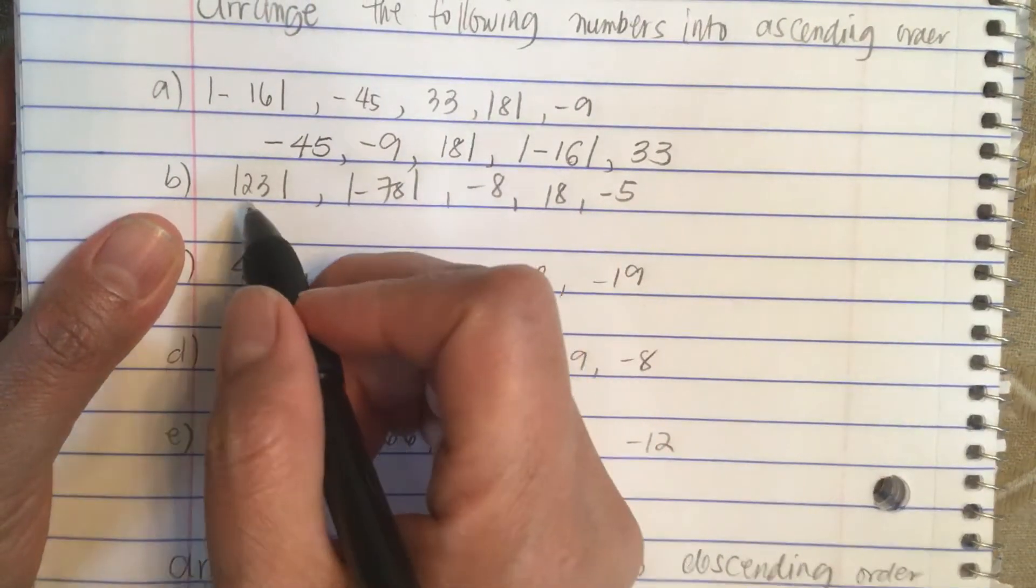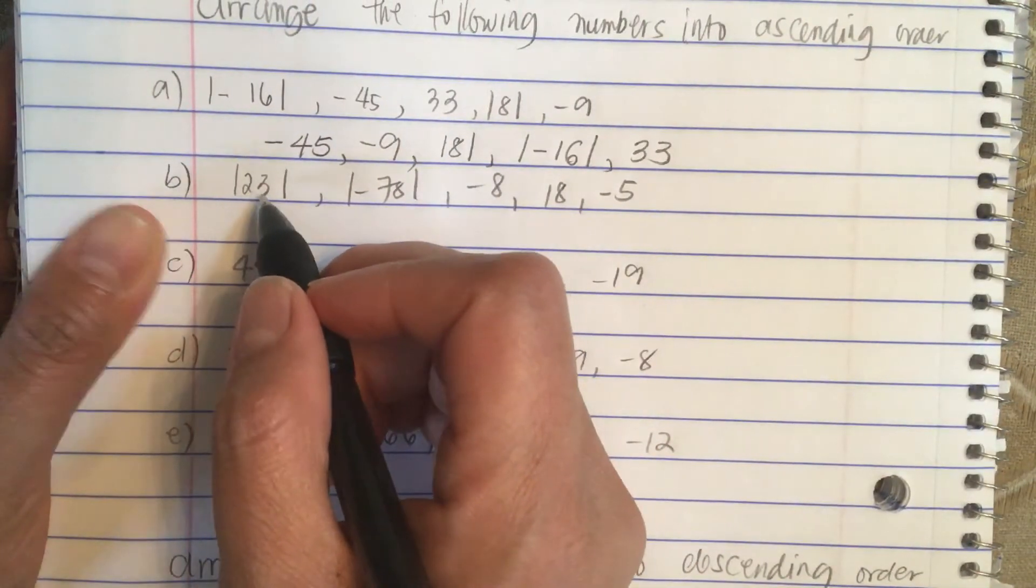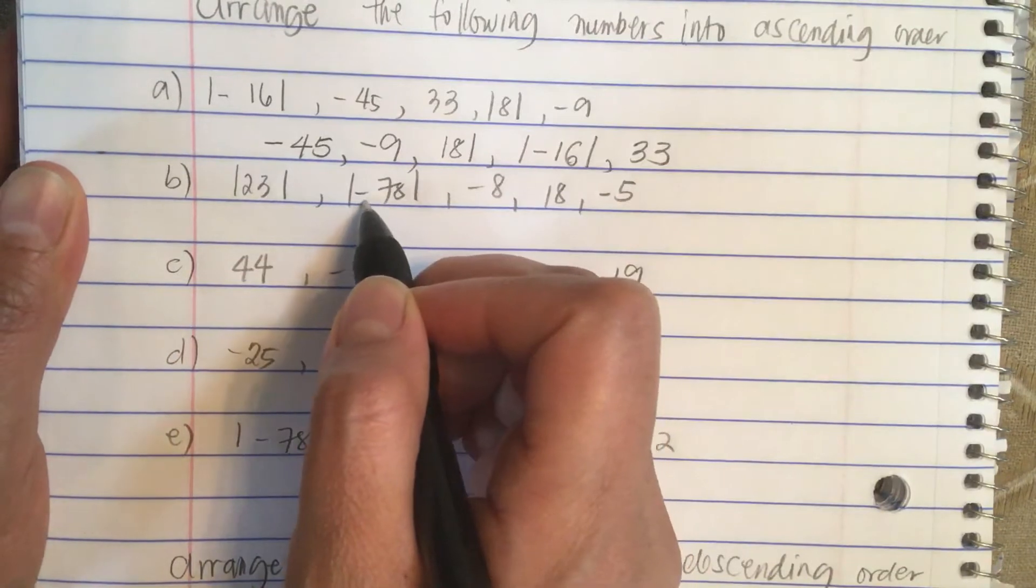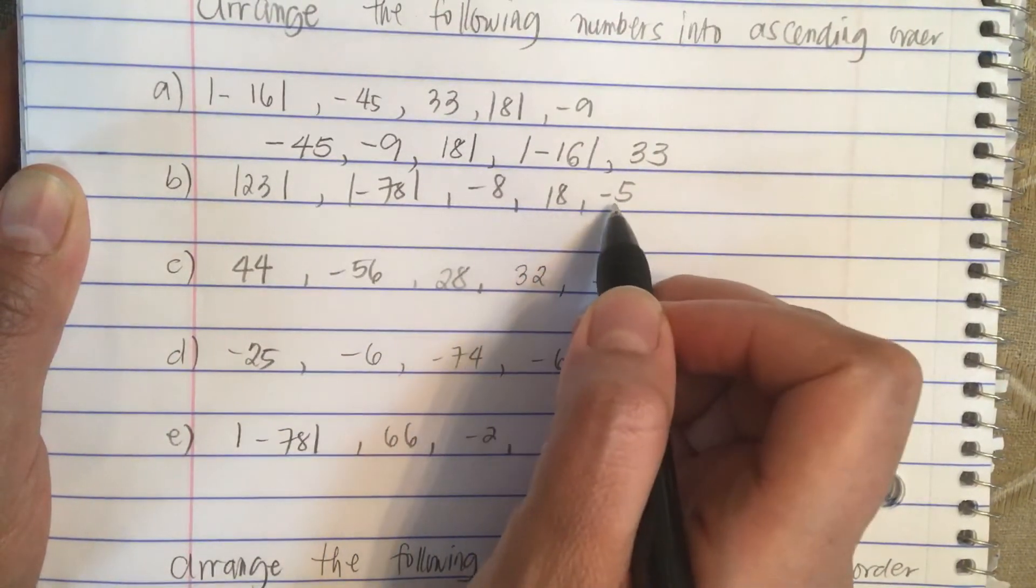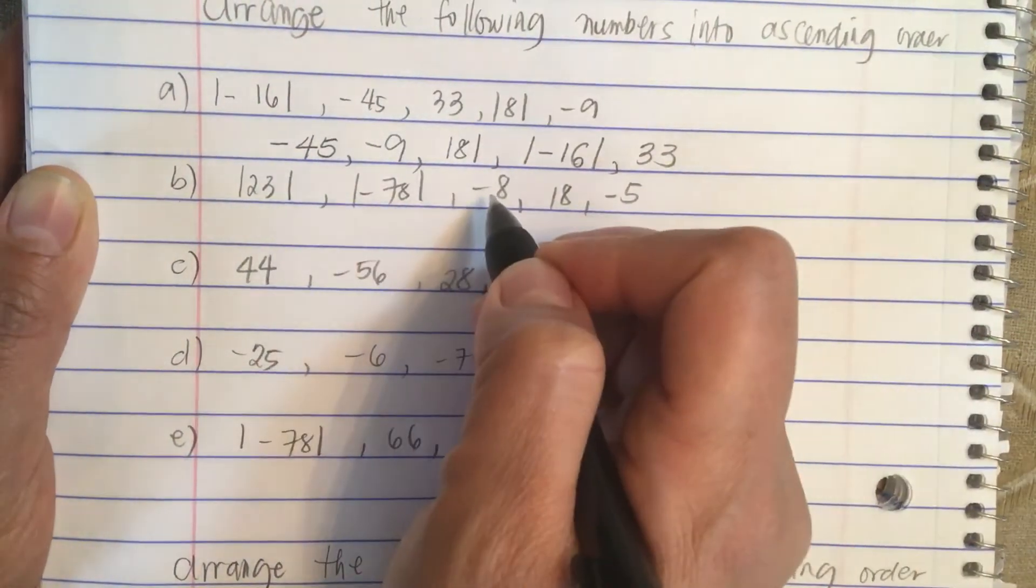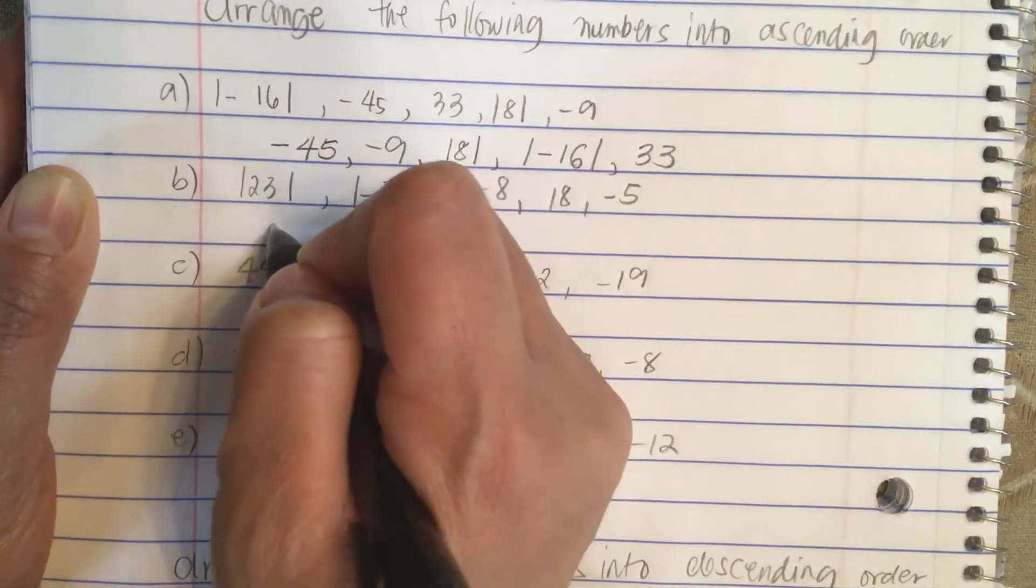So the next one, we have an absolute value of 23, absolute value of minus 78, a minus 8, 18, and a minus 5. So the smallest number is minus 8.